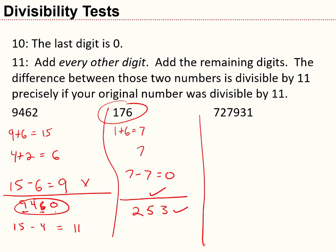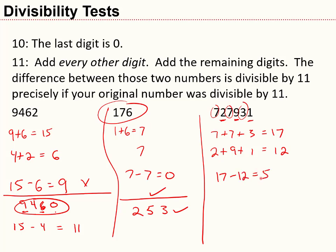Here's a last example for divisibility by 11. Taking every other digit: 7 plus 7 plus 3 equals 17. The other digits: 2 plus 9 plus 1 equals 12. The difference is 17 minus 12 equals 5, which is not a multiple of 11. So that large number is also not a multiple of 11.